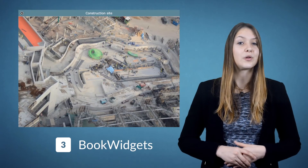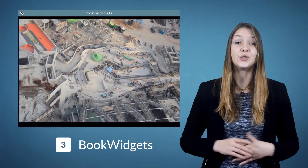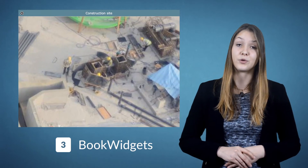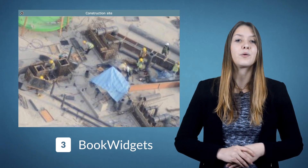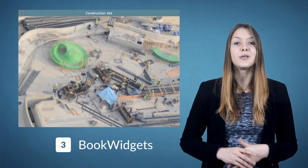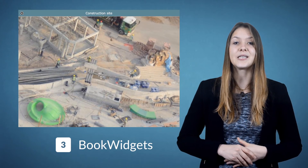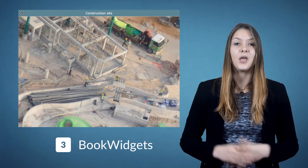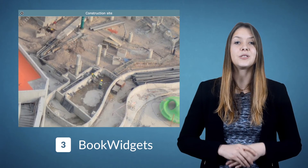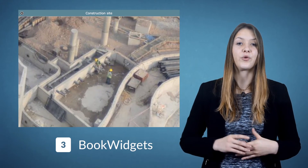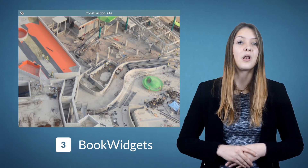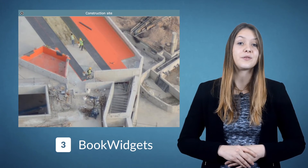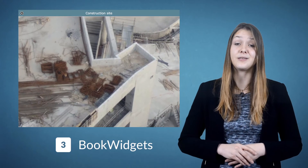Want to let students have a closer look at an image? Zoom and pan around a large image with the Image Viewer widget. You'll need a high-resolution image, but this is great for letting students explore images from a microscope, for instance. In language classes you can use this for speaking exercises — for example, by using pictures with a lot of things going on. They can zoom in on different areas and describe what they see.